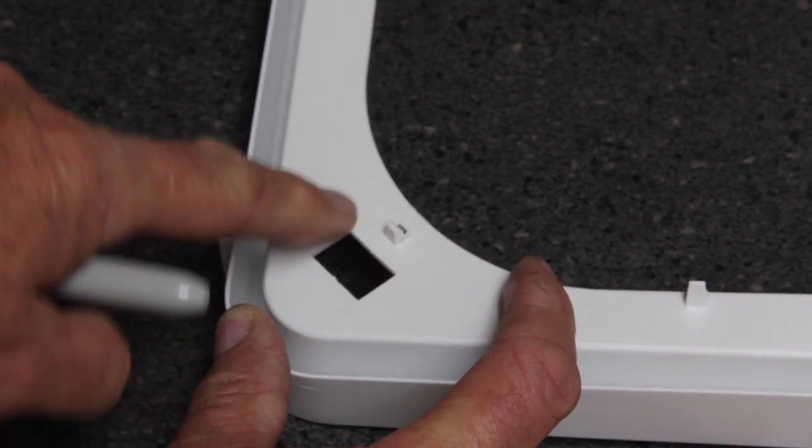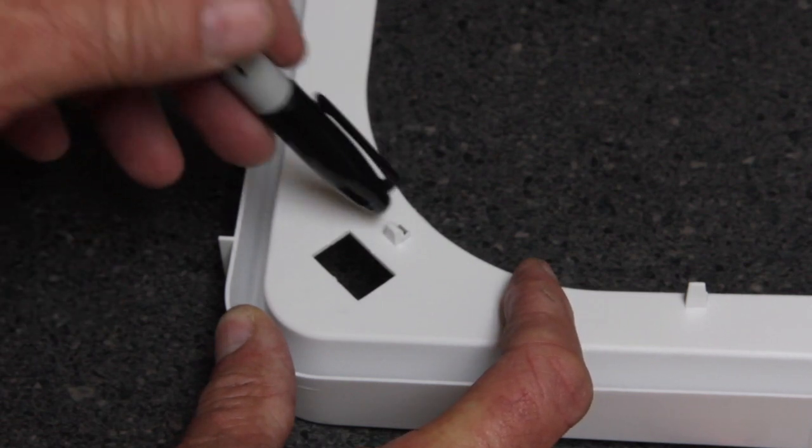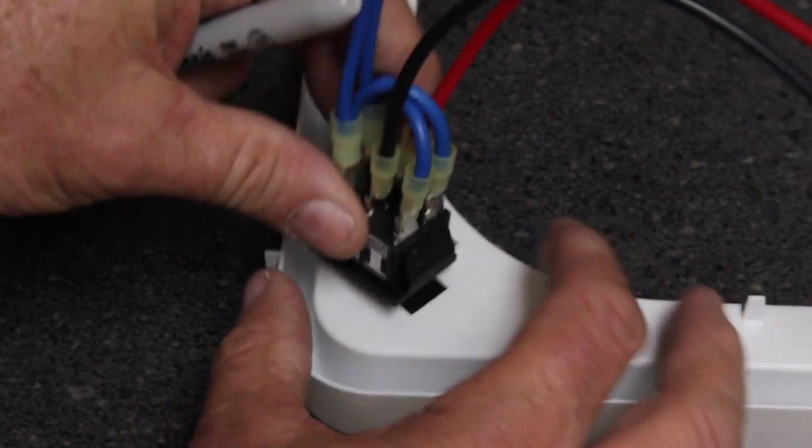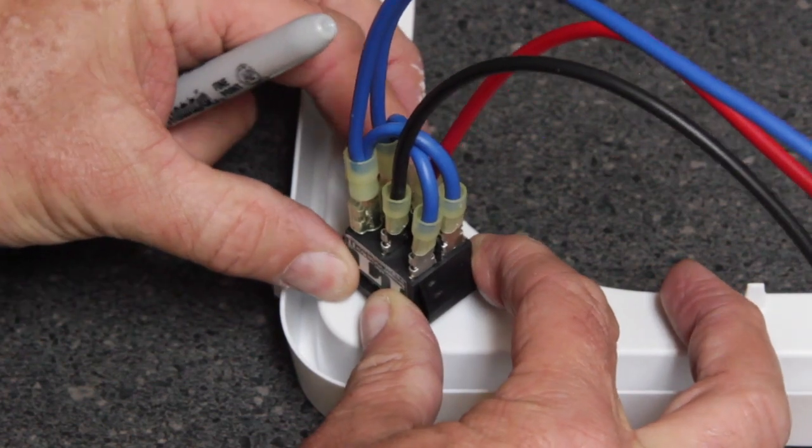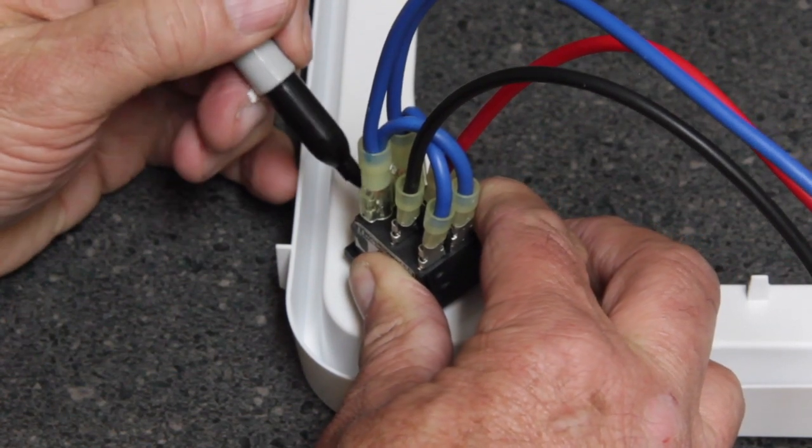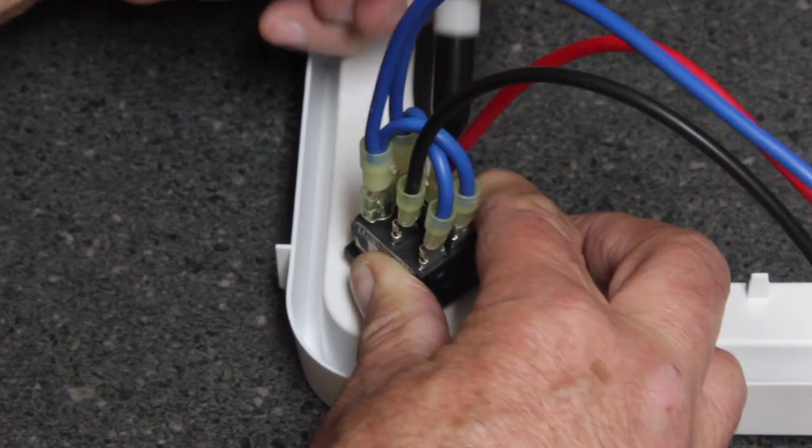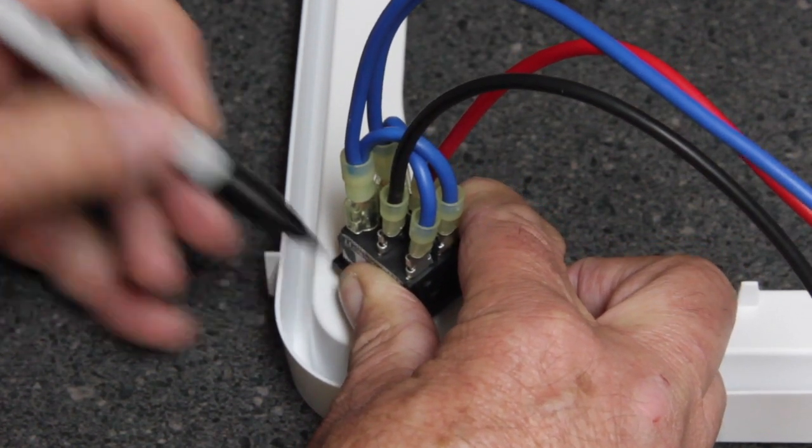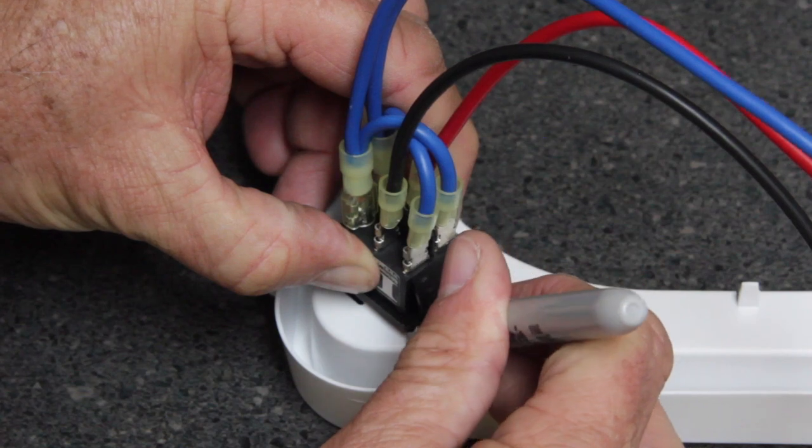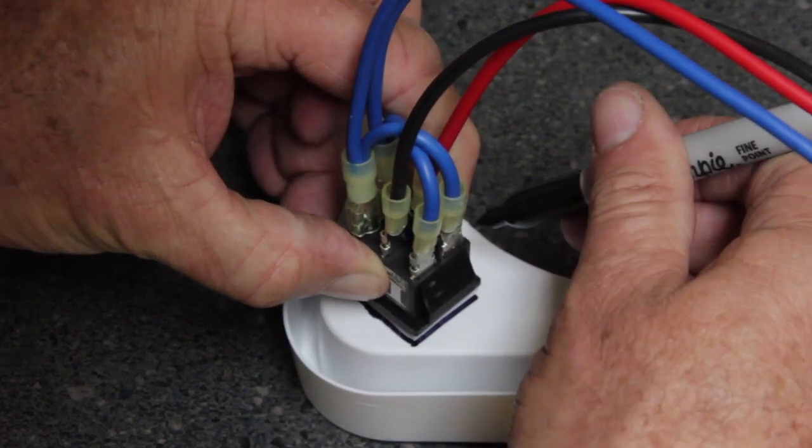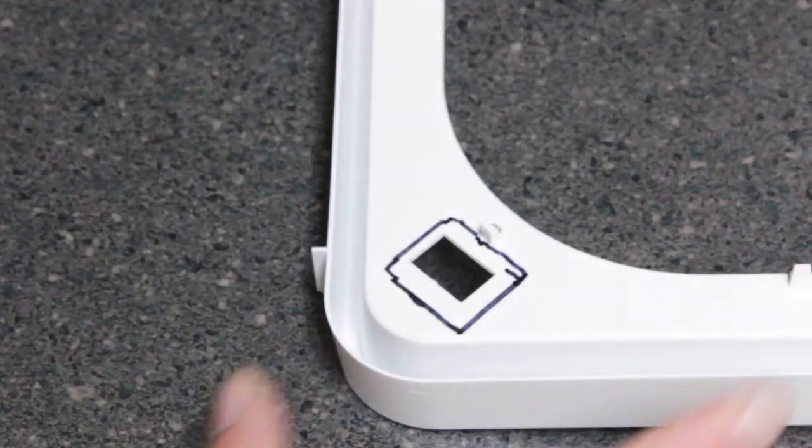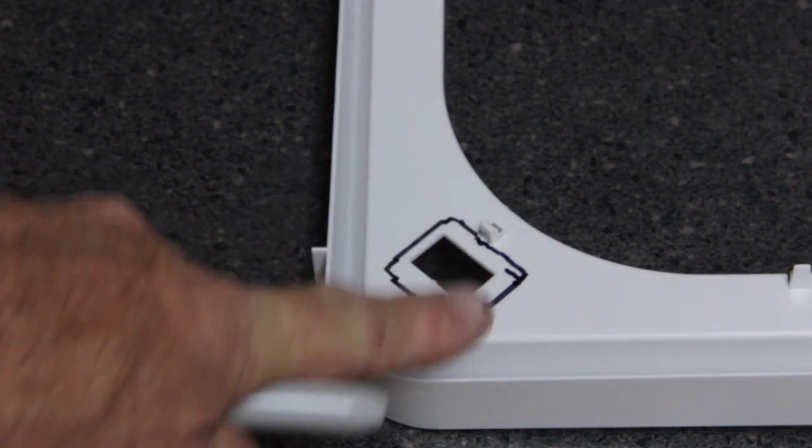Notice this is the original hole and you have a tab right here. We do not want to cut into that tab. Take the new switch, position this switch, take our felt tip marker and mark around the base of the new switch. This is the area that we want to remove the material.